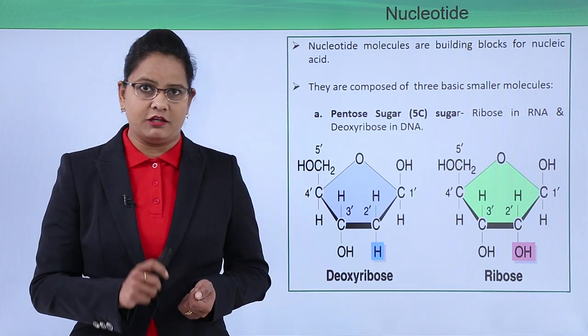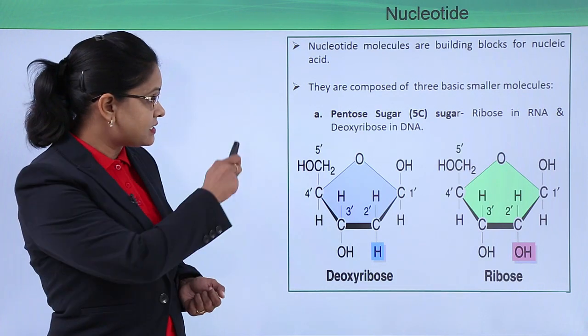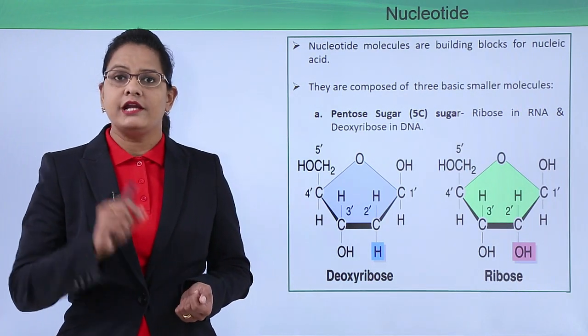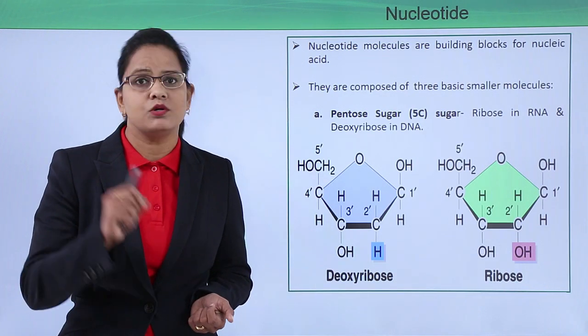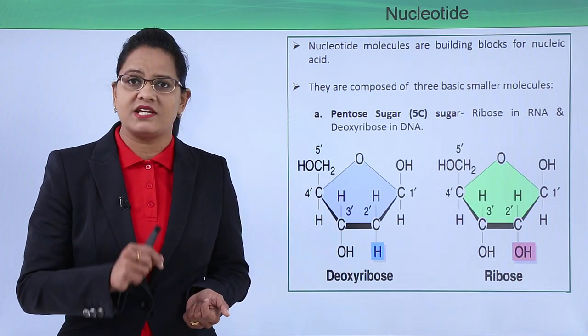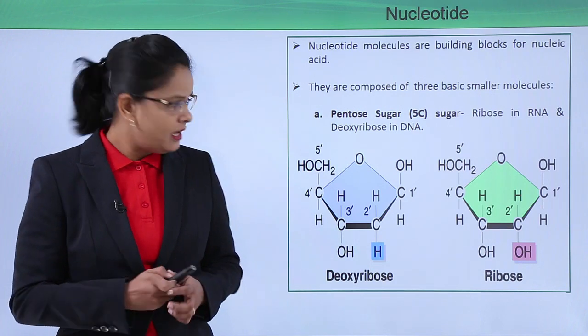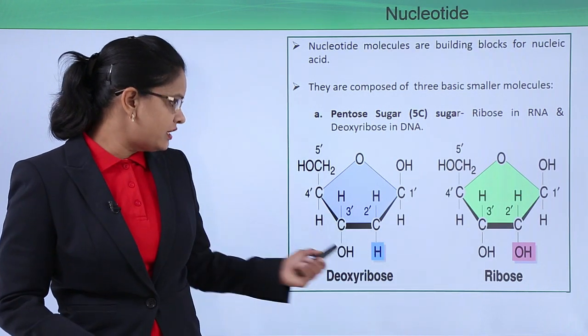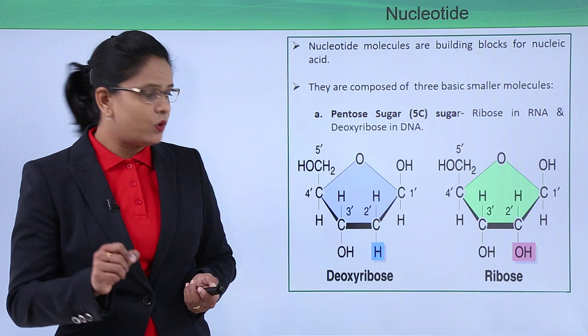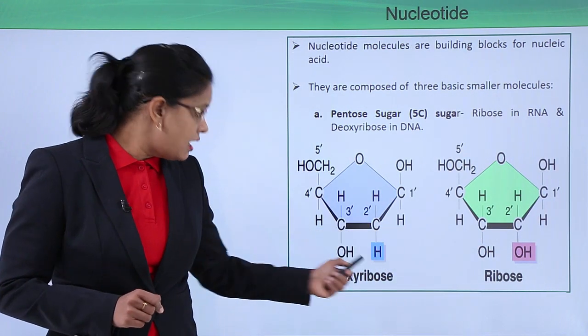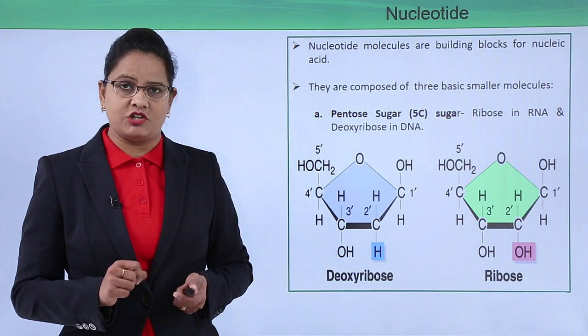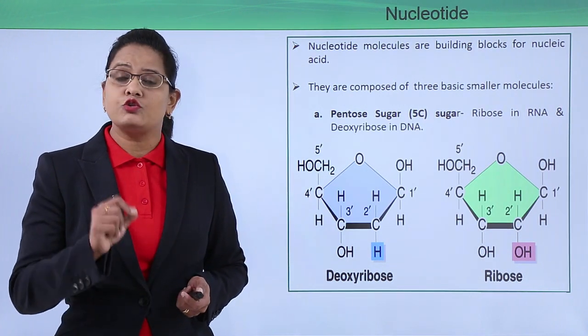Let us see each component one by one. The first component present is a pentose sugar, which is a five carbon sugar. The important ones were ribose and deoxyribose, which are present in DNA and in RNA. The difference between a ribose sugar and a deoxyribose sugar was that at the second position, in place of OH which is present in the ribose, a H is present in deoxyribose. So it is called 2' deoxyribose because it lacks the OH group.